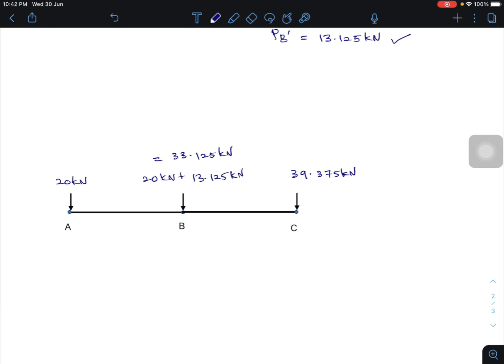Those are the loads that transfer to joint A, joint B and joint C with values of 20 kN at A, 33.125 kN at B, and 39.375 kN at C.